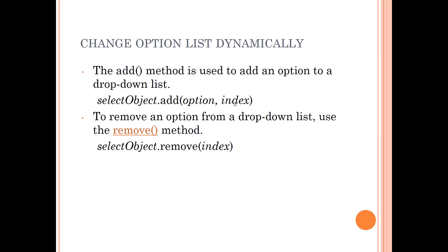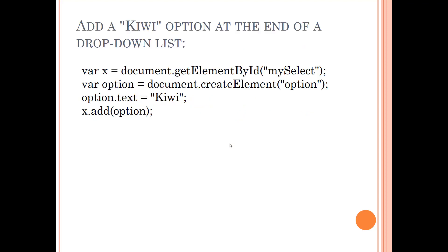Similarly, you can remove an option from the list dynamically. The method used is called the remove method. The syntax is: select_object.remove(index). This method will remove the element present at that index location.